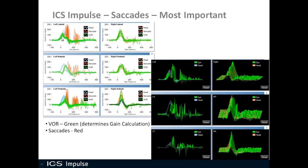In the 3D view, the eye is always green and the head is either blue or orange for left and right. Catch-up saccades for the left side are visible while the right side has none. Catch-up saccades can be viewed in either 2D or 3D view.